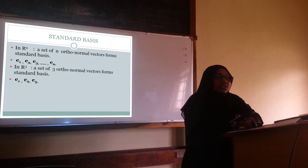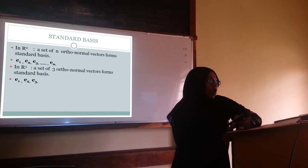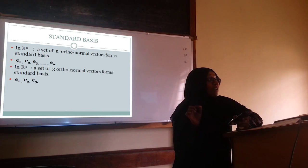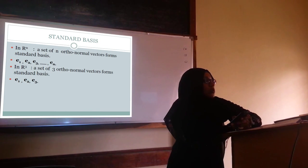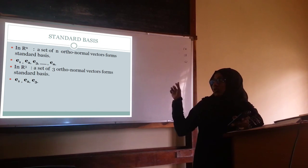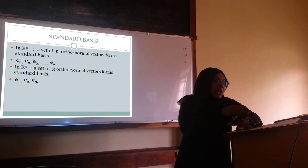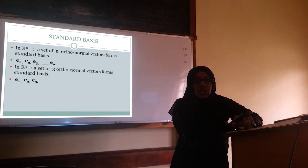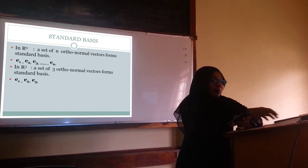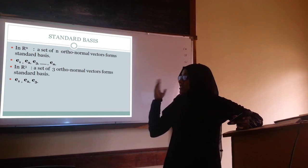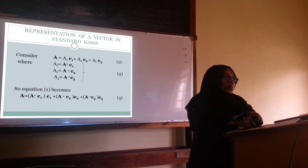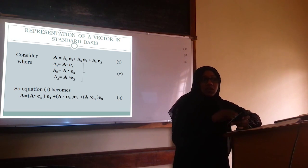If we consider the R^n space, a set of n orthonormal vectors forms the standard basis. We usually denote it using e1, e2, e3, etc., up to n. For the R^3 space, that is three-dimensional space, a set of three orthonormal vectors forms the standard basis, usually represented by e1, e2, e3 — and the general representation is i, j, k.